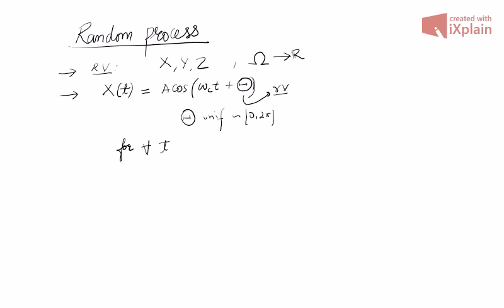For every time instant — say T1, T2, up to Tn — we have correspondingly X(T1), X(T2), ..., X(Tn). All of these are random variables.